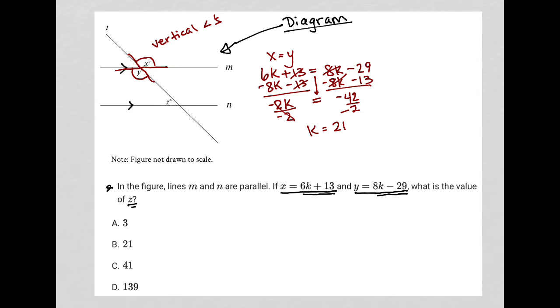So what was the point of finding K? K allows me to then figure out the value for angle Y. Angle Y has a separate relationship with angle Z. These two angles are considered same side interior.